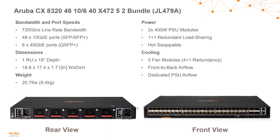Looking at the 8320 details, the 48-port SFP+ model can provide 720 gigabits of line-rate bandwidth. It has 48 10-gig ports which can operate at 1 gig or 10 gig, plus six 40-gig uplinks. It uses standard 19-inch rack dimensions, has two redundant hot-swappable power supplies, and five fan modules on the back. These fan modules are front-to-back airflow — the handles are red, indicating that hot air will be blowing out the back of the switch.